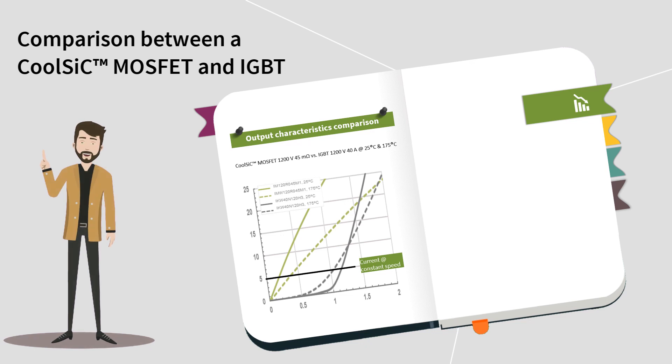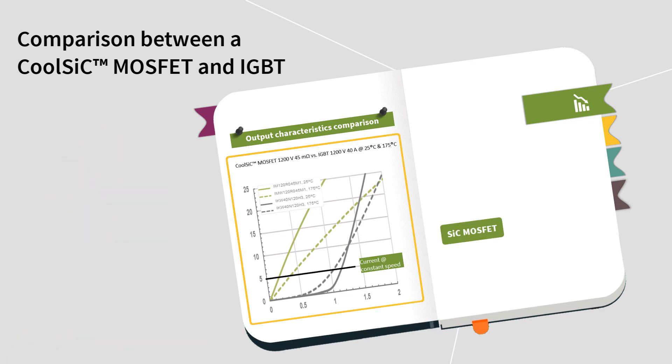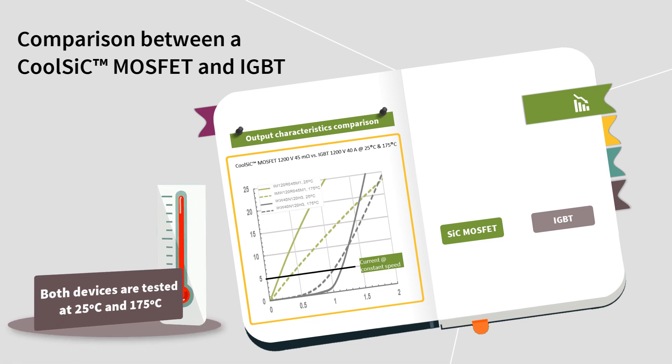Let's compare output characteristics between different semiconductor technologies and see why CoolSIC MOSFET can be the best choice. Here, you see a comparison between a CoolSIC MOSFET 1200V and an IGBT 1200V. Both devices are tested at 25 degrees Celsius and at 175 degrees Celsius.